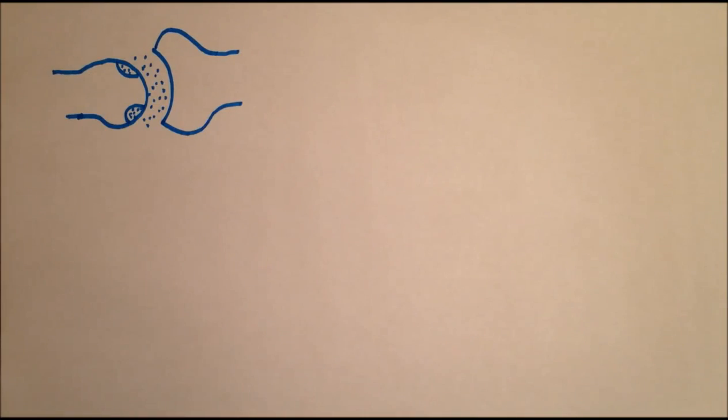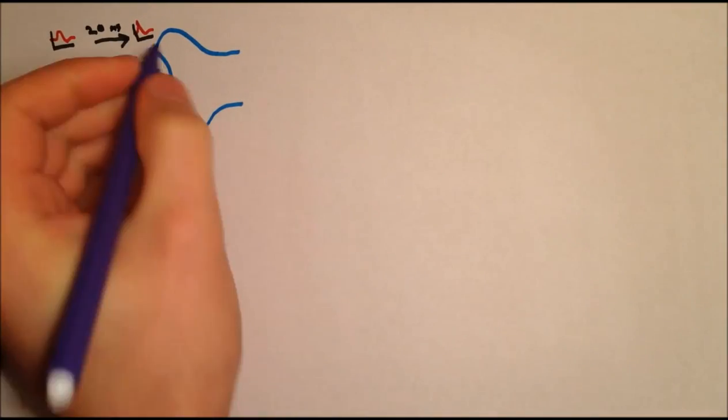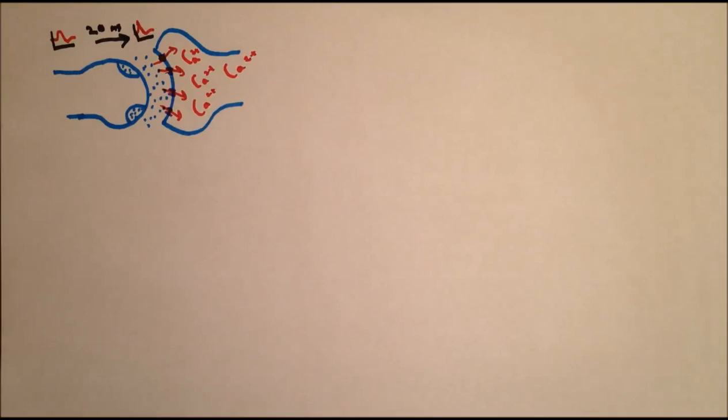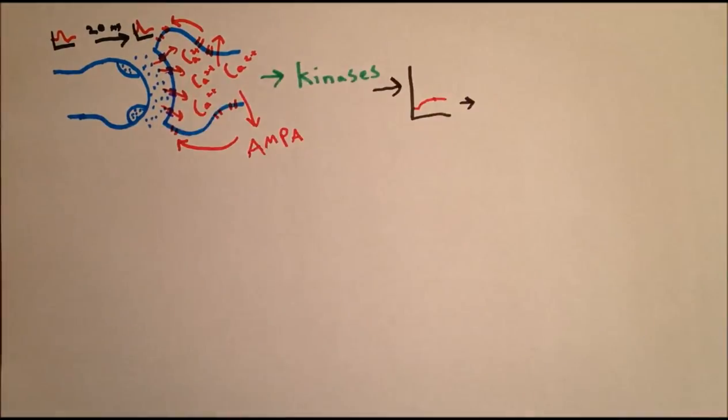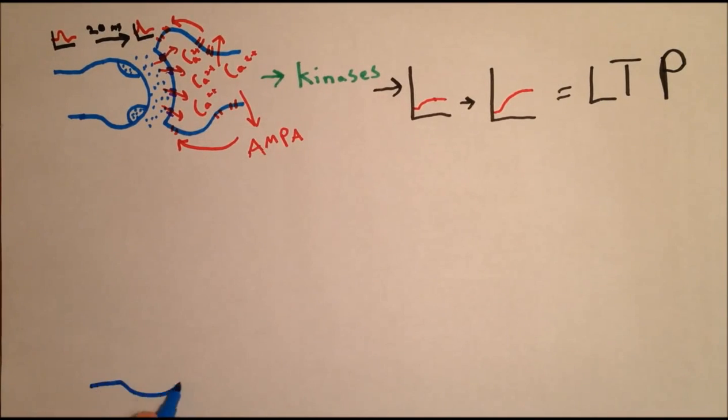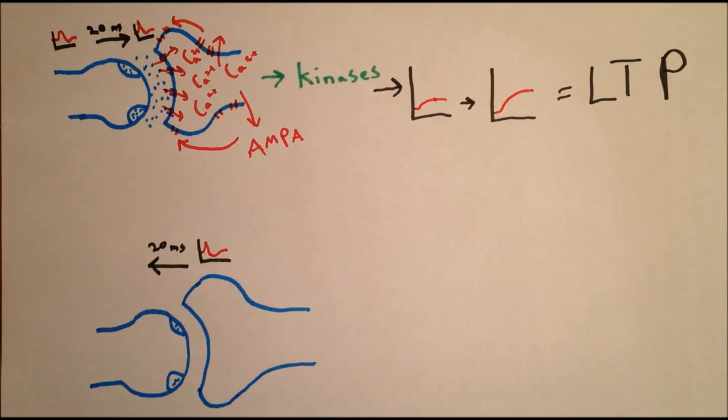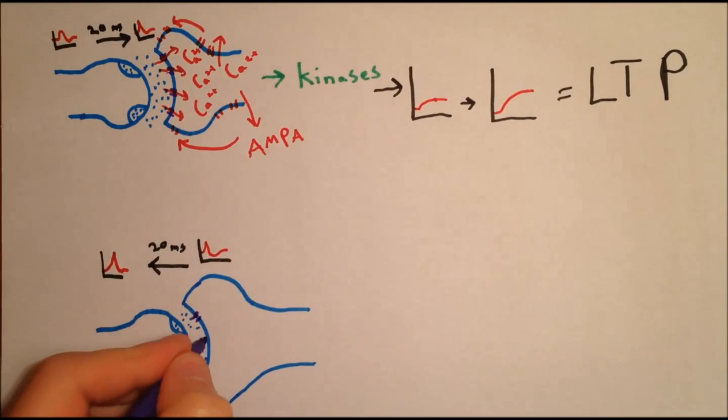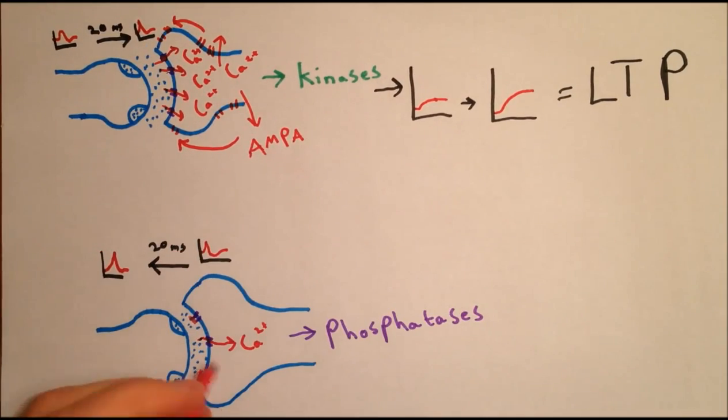In conclusion, if the postsynaptic neuron fires within the 20ms after the presynaptic neuron, glutamate combines with lots of NMDA receptors, and the calcium influx is large, triggering calcium-dependent kinases, which lead to more AMPA receptors at the dendrite. And if the postsynaptic neuron fires within 20ms before the presynaptic neuron, when the glutamate arrives, most of the NMDA receptors are blocked, so the calcium influx is small, and calcium-dependent phosphatases get triggered instead, leading to fewer AMPA receptors at that dendrite.